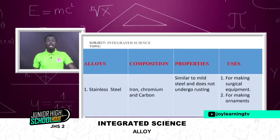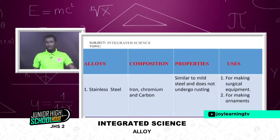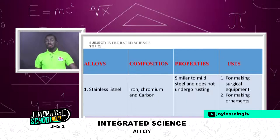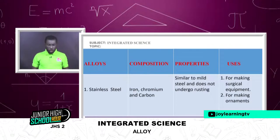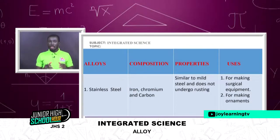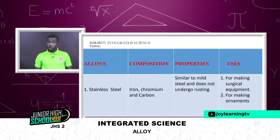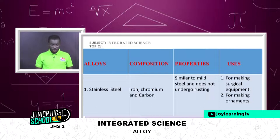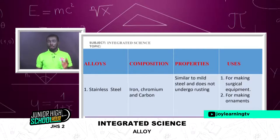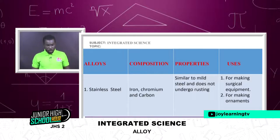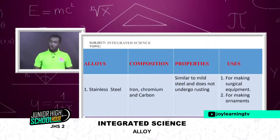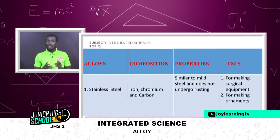The first alloy on the table is stainless steel. I'm sure you've seen stainless steel cutlery — knives, forks, and spoons. The composition of stainless steel includes iron, chromium, and carbon. Note that iron and chromium are not among the first 20 elements, but carbon is.